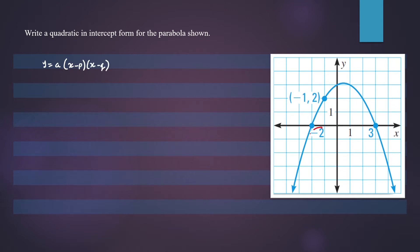In this case, p equals negative 2 and q equals 3. So we can substitute those numbers. We have y equals a times x minus p, and p is negative 2, so that would be x plus 2, times x minus q, and q is 3, so that would be x minus 3.